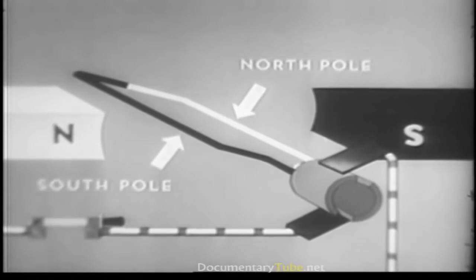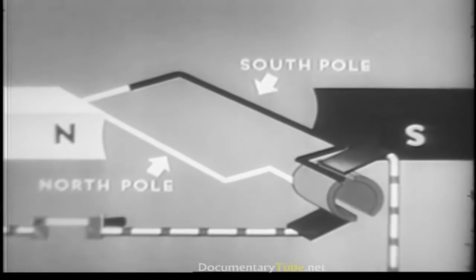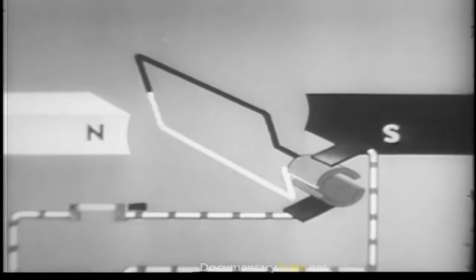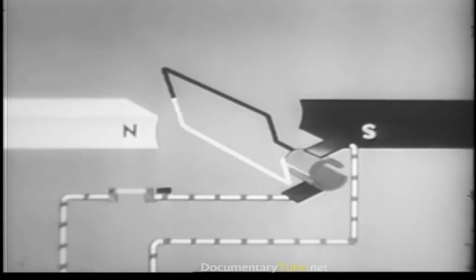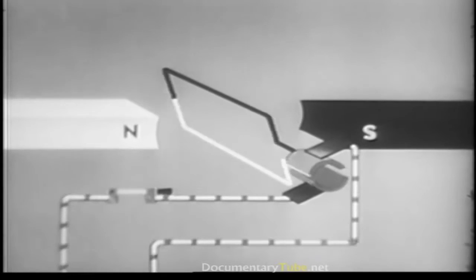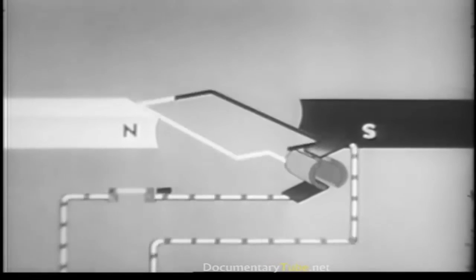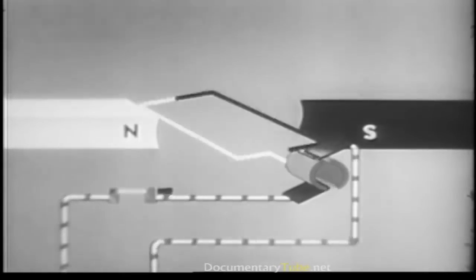The loop's south pole becomes the north pole. As such, it rotates toward its opposite, the south pole of the bar magnet. But again, the direction of the current in the loop is reversed. So the north pole of the loop and the south pole of the magnet never quite get together, and the rotary movement continues as long as current is flowing.